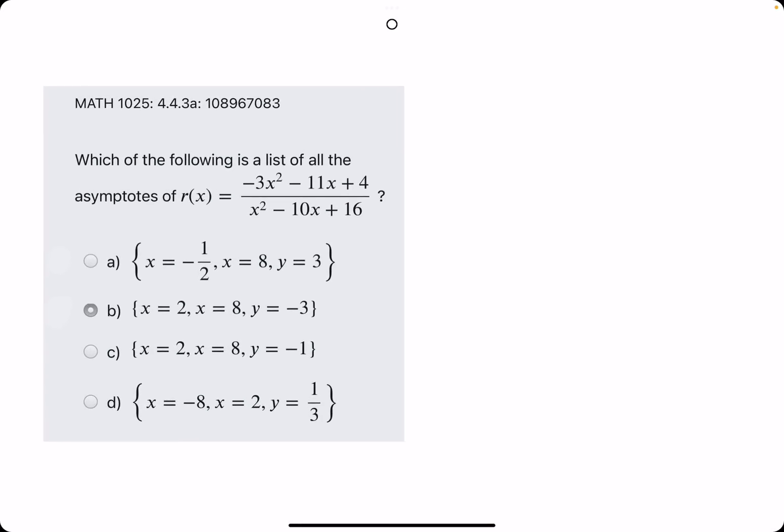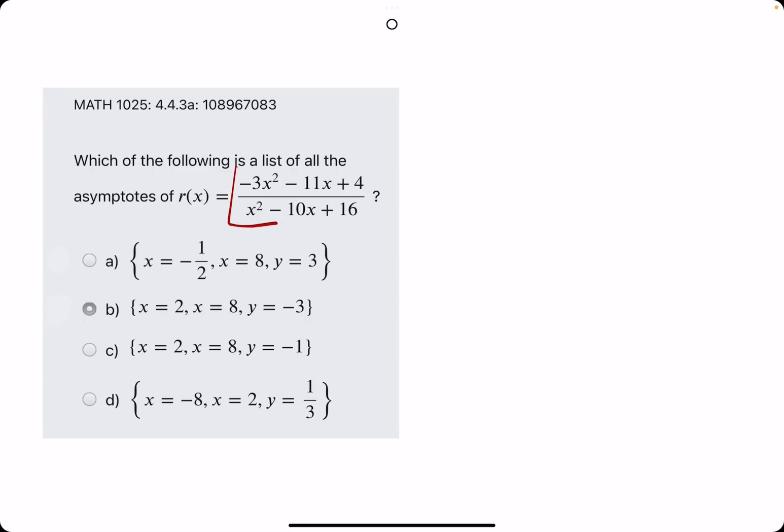Let's go ahead and do one more real quick. Again, horizontal asymptote we find from the coefficients of the x squared terms. So, negative 3 over 1 is negative 3. So, y equals negative 3 is what we're looking for.